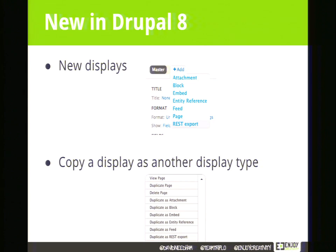Also new: the ability to copy a display as another display type. This is huge — a long-requested feature. You've created a block for latest news; now you want something very similar but different, maybe for a specific author or as an RSS feed. Previously you'd have to start over creating a new display from defaults. Now you just click the dropdown, choose which display type to duplicate it as, and it creates it. A massive time saver for everyone.